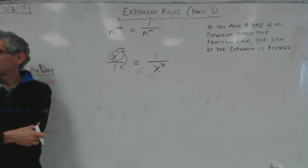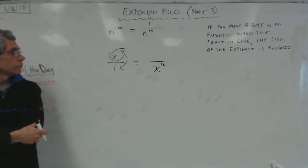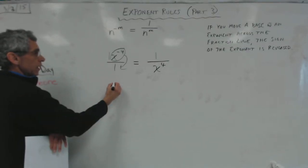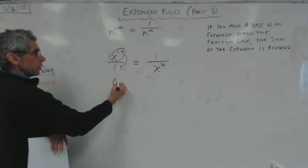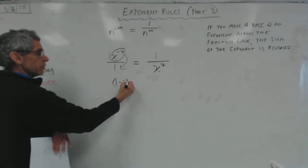So I've got 1 over x to the 4th. Yes. I have a question. Yes. What if you had parentheses around the 1 and the x with the negative 4 next to it? Wouldn't you have to move the 1 as well? Okay. That's interesting. So let's try that. Let's try that. So you're saying like this. Right?